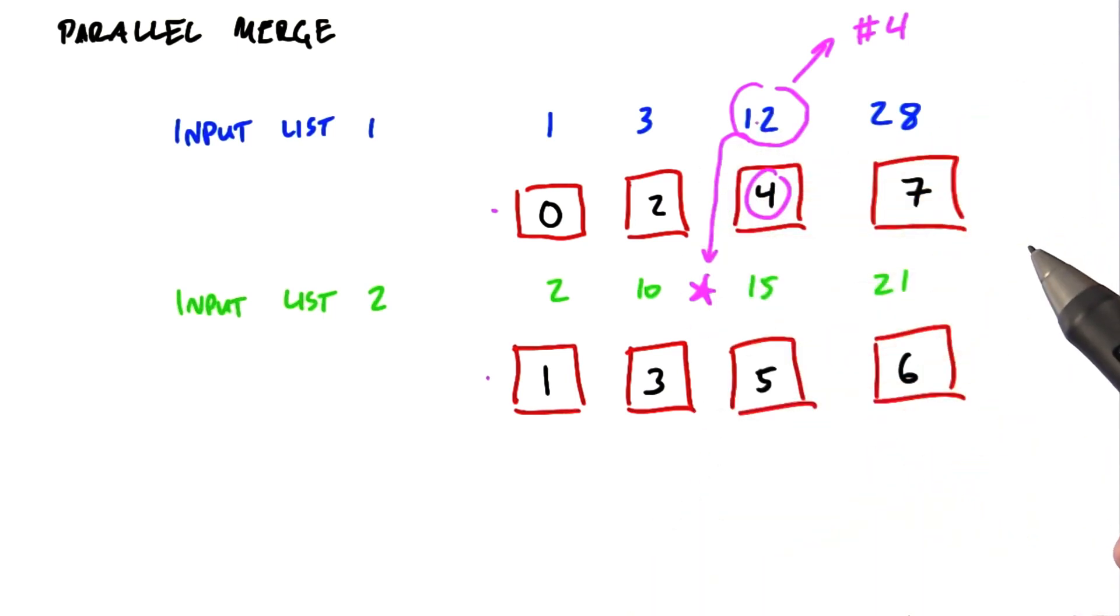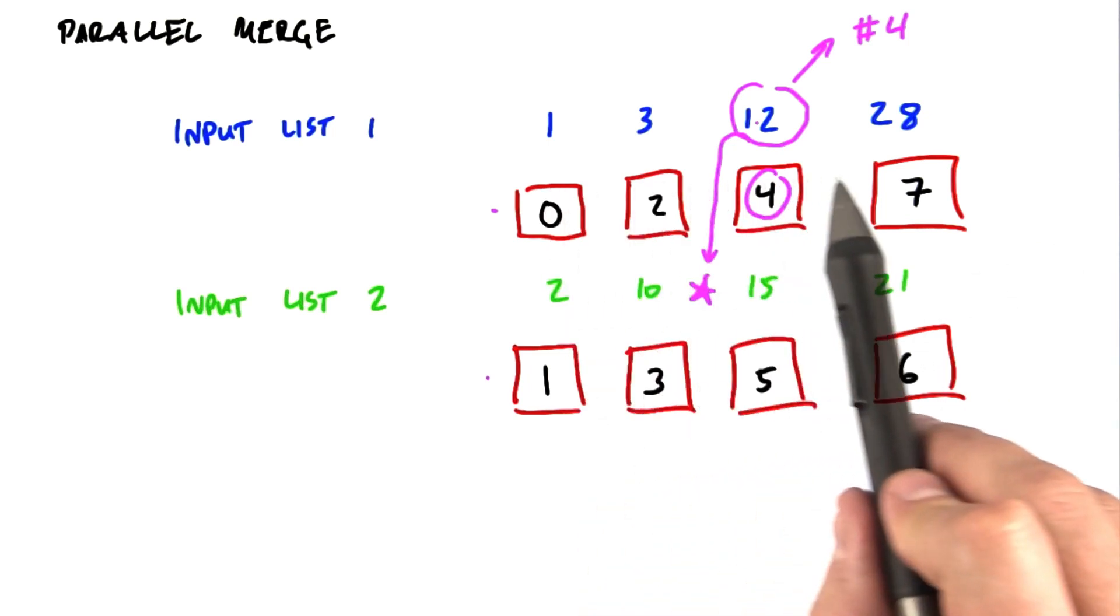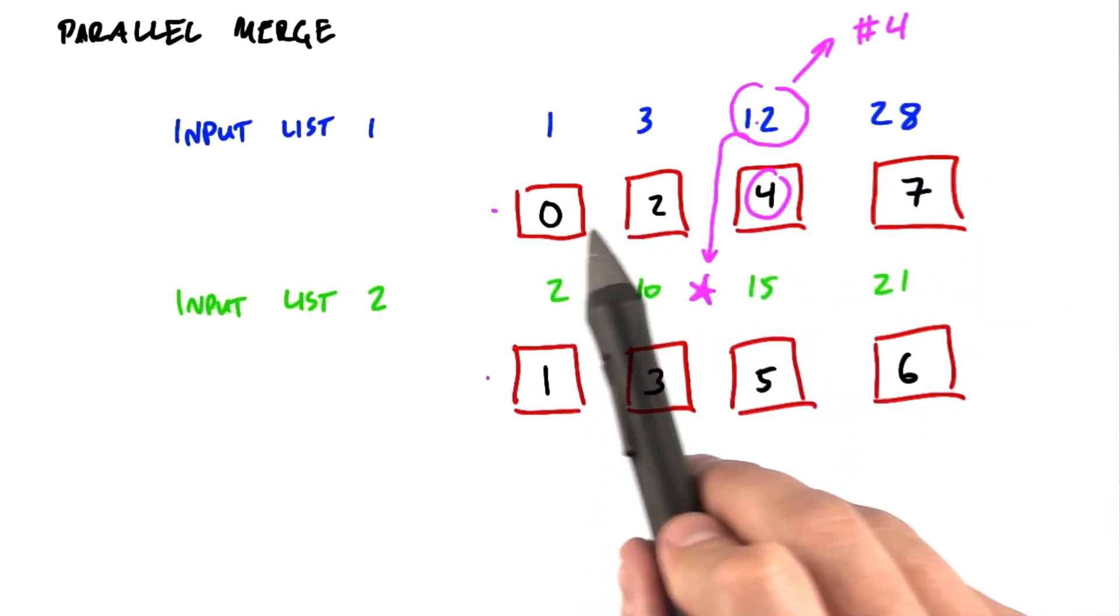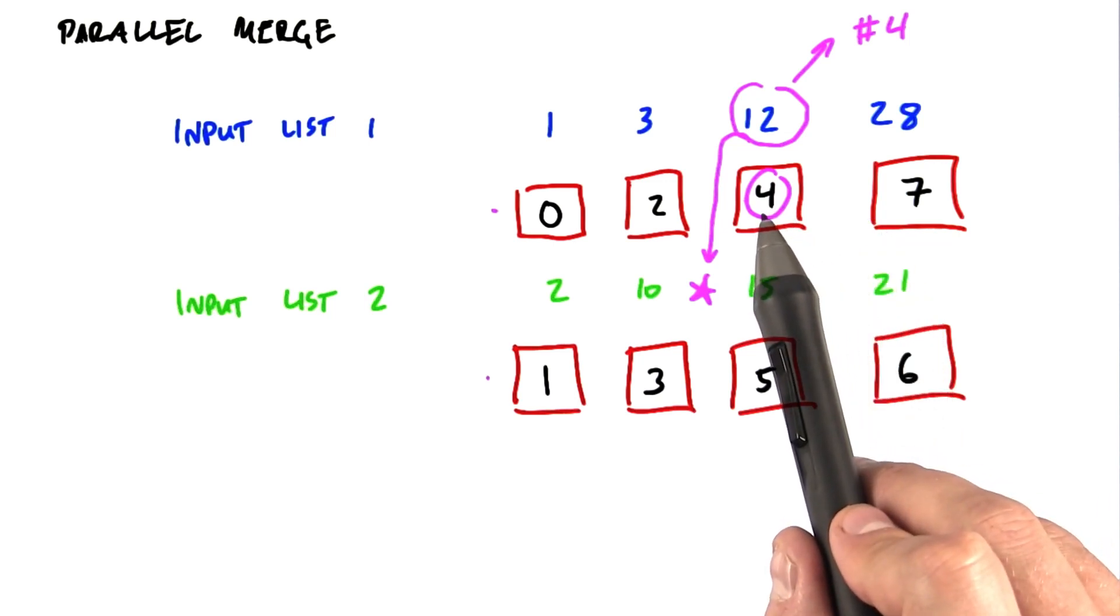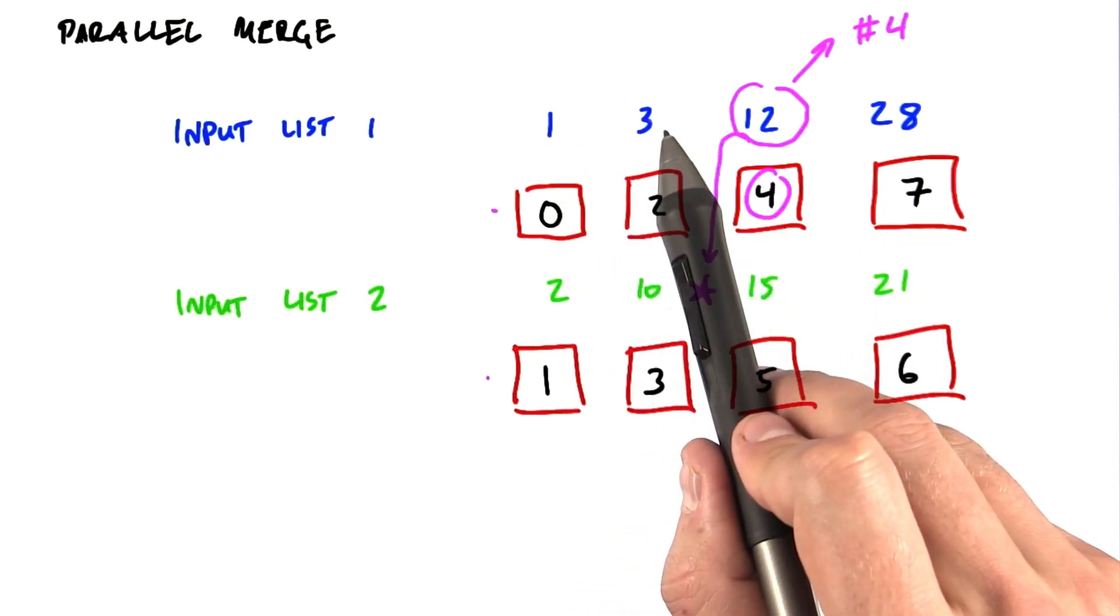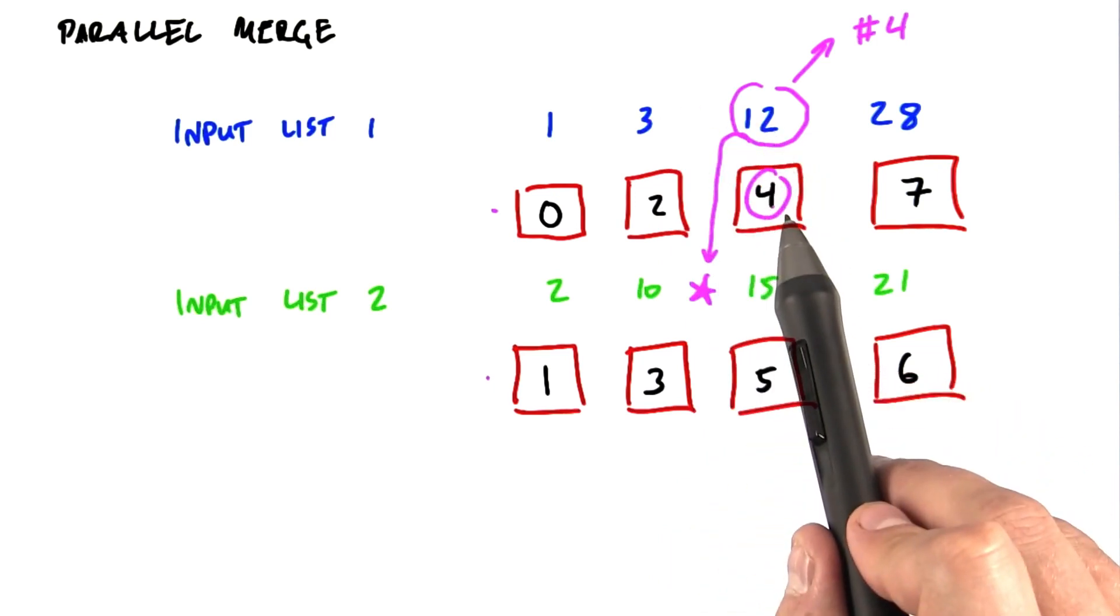So how do we know our position in our own list? Well, that's very simple. We've launched these threads as a contiguous block with one element per thread. So I'm going to be exactly at my thread ID. He's thread ID 0, he's thread ID 1, and he's thread ID 2.